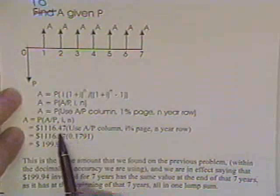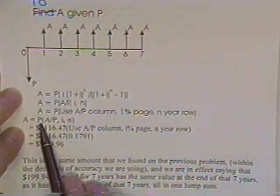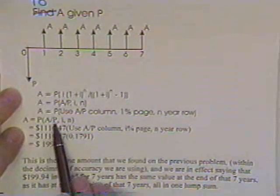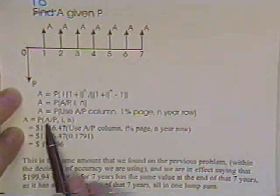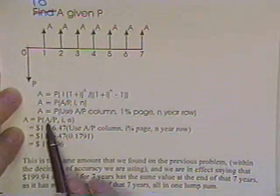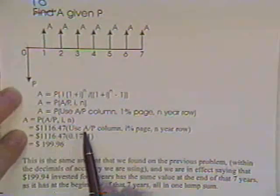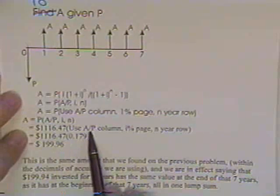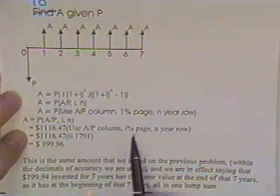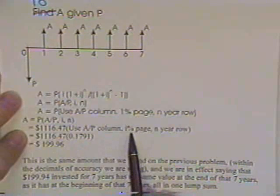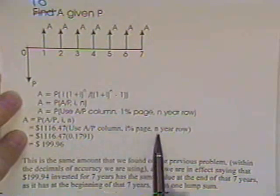Can be found by multiplying the present value times A over P. P cancels P, appears to, leaving you A. That's what I want to know. How much can I withdraw?